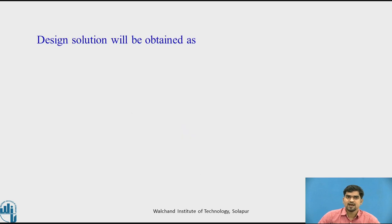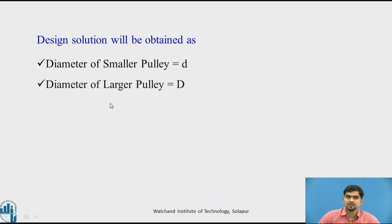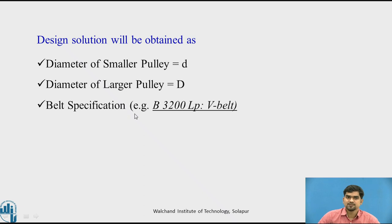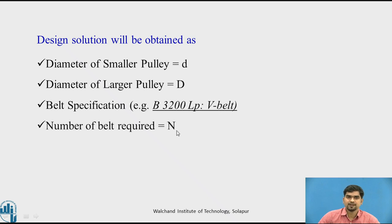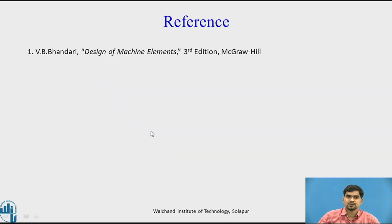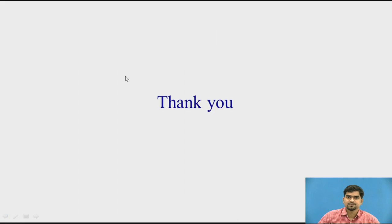The final design solution includes: diameter of the smaller pulley, diameter of the larger pulley, belt specification (e.g., B 3200 LP V-belt, where B is the cross-section and 3200 is the pitch length), the number of belts required N, and the center distance C. Thank you.